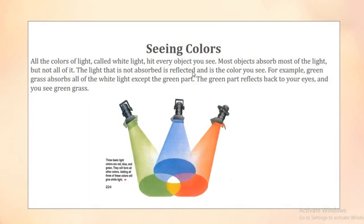You can see all the colors of light here. When all the colors of light are combined, it is called white light. Red, blue, and green together make white.